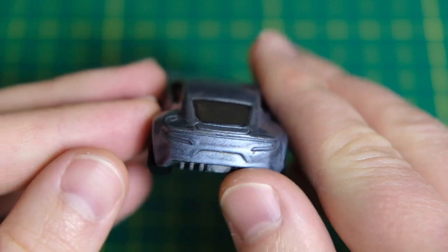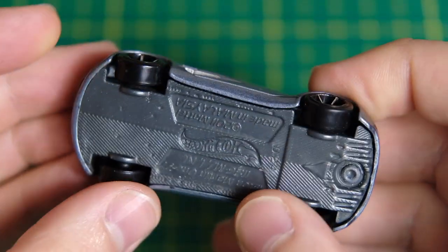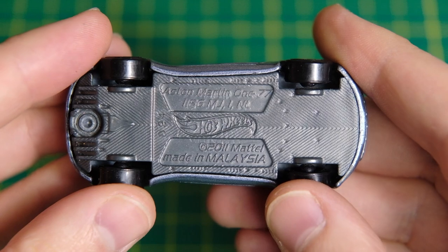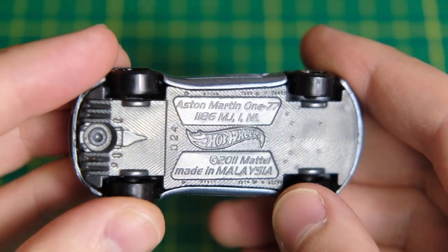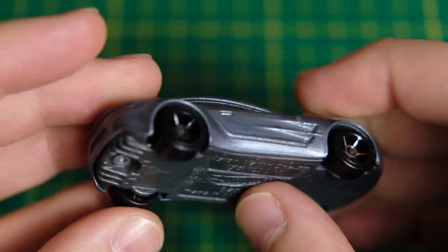This play-worn example is a 2011 model indicated by the code D24 on the base. The D is the year identifier and the 24 refers to the 24th week of the year when the model was produced.